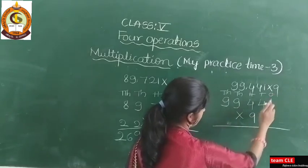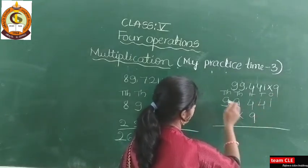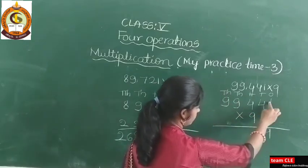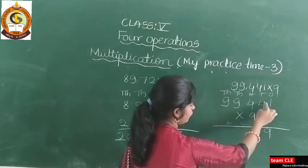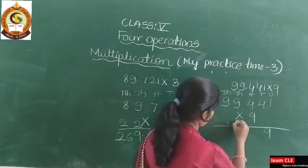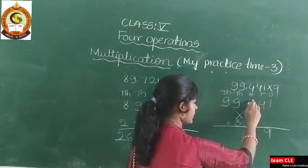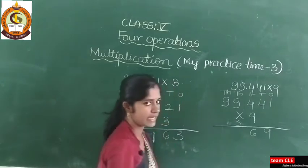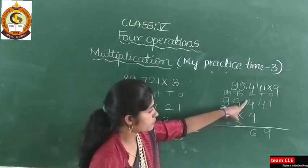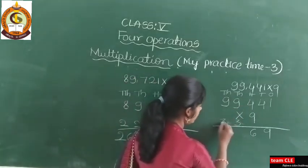Start with the 1s place: 9 into 1 is 9, 9 into 4 is 36. Take 3 as carry and write 6. Then the next 9 into 4 is 36. Don't write 36 directly — you need to add the carry also. 9 fours are 36, plus carry 3 is 39 — carry 3, write 9.